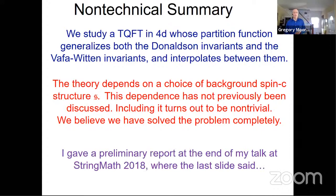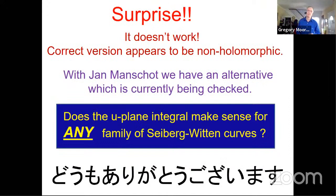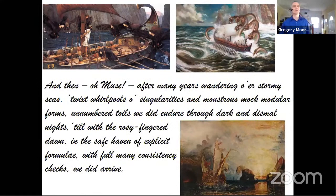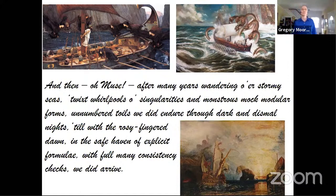We believe we've completely solved this problem, but I have to admit that at the end of my String Math talk 2018 in Sendai, Japan, I gave a preliminary report of this work. That was the very last slide of that talk, saying with Yan Manschot we have an alternative measure which is currently being checked, and we thought it's just a couple of weeks before we get the paper out. Then — oh muse — after many years wandering o'er stormy seas, twixt whirlpools of singularities and monstrous modular forms, unnumbered toils we did endure through dark and dismal nights, till with the rosy-fingered dawn and the safe haven of explicit formulae with full many consistency checks, we did arrive.